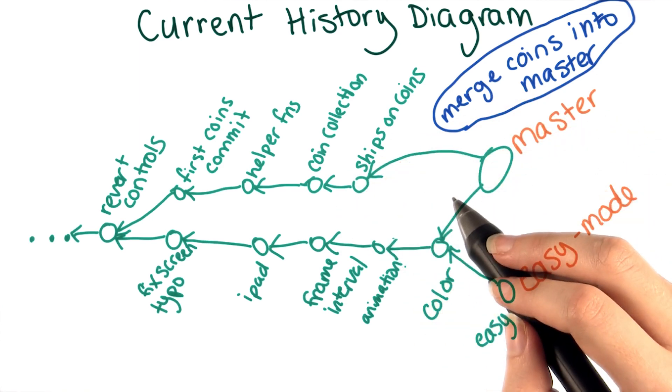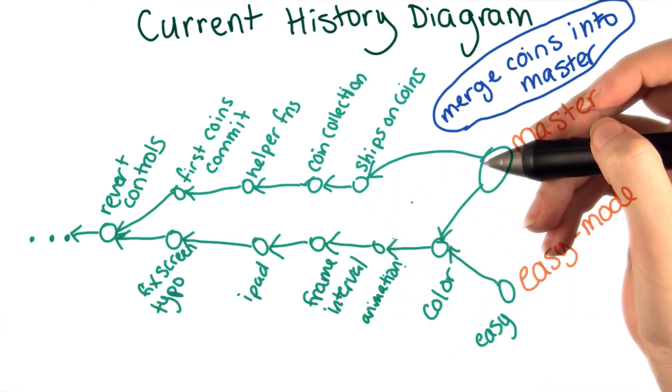Note that when we talk about deleting branches, we mean deleting the label. The commits will still be there in the history.